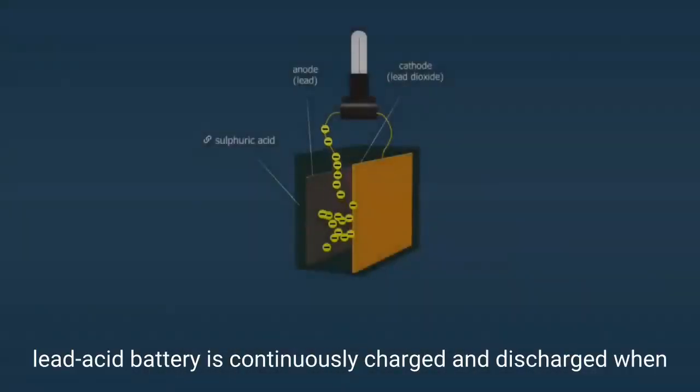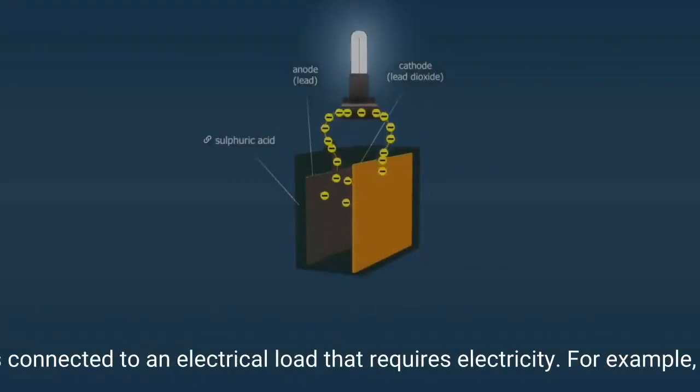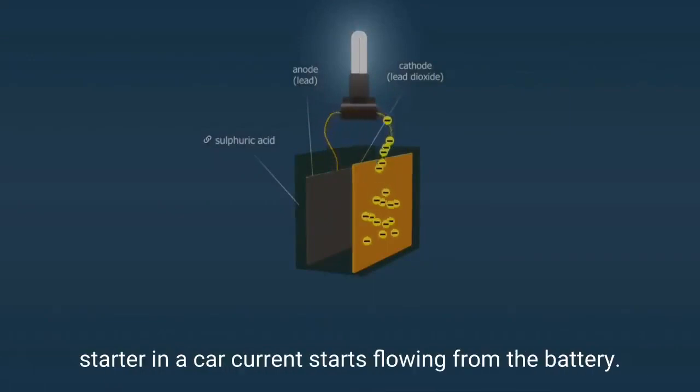A lead acid battery is continuously charged and discharged. When connected to an electrical load that requires electricity, for example the starter in a car, current starts flowing from the battery.